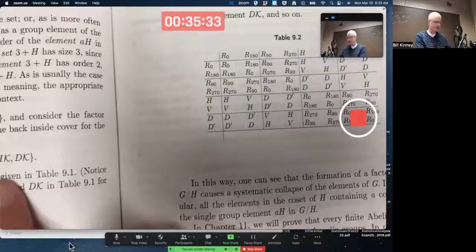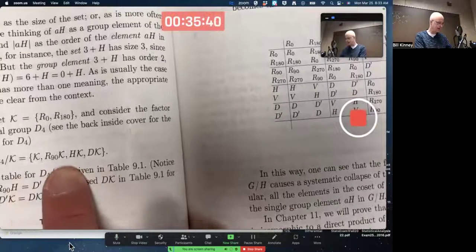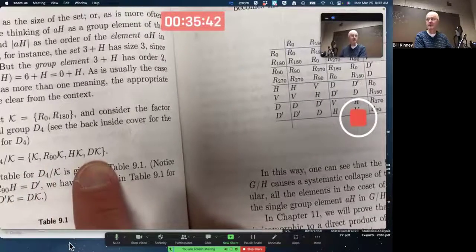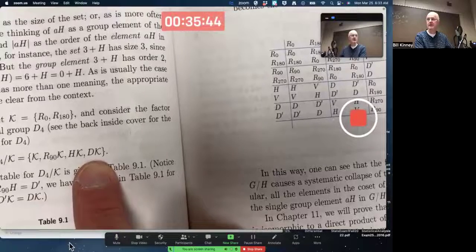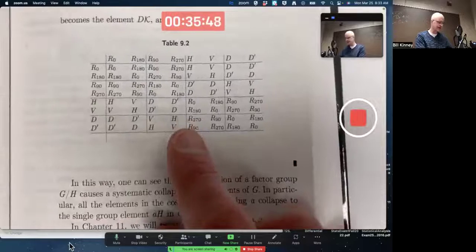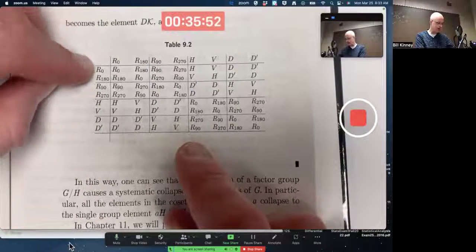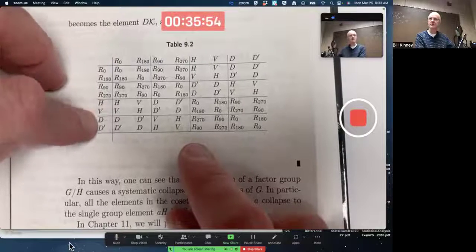It's got four elements. The elements are cosets, which typically we write like this. Keep in mind that K is a subgroup and the R90, the H and the D are elements of D4. It's got four elements. You can think of those four elements as being these blocks, so to speak, these sets in groups of two.